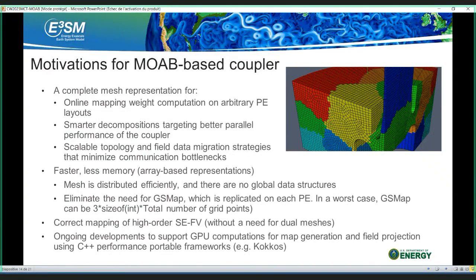I want to move to what we've been doing with MOAB. Our motivations for a MOAB-based coupler: we want a complete mesh representation for online mapping calculations, smarter decompositions, and scalable field data migration to minimize communication bottlenecks. MOAB is faster and less memory intensive — it uses purely local memory for all data types. MCT has a global segment map replicated on every processor that can be up to three times the number of integers times the total grid points. MOAB also supports correct mapping of high-order spectral elements to finite volumes without dual meshes, and has ongoing GPU computation support via C++ frameworks.